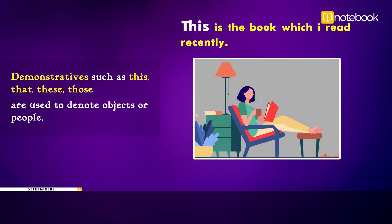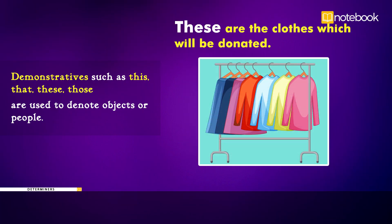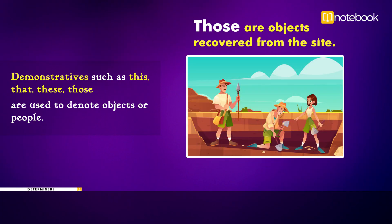Next we have the demonstratives, such as this, that, these, and those, which are used to denote objects or people. Examples: This is the book which I read recently. That is the route you have to take. These are the clothes which will be donated. Those are objects recovered from the site.